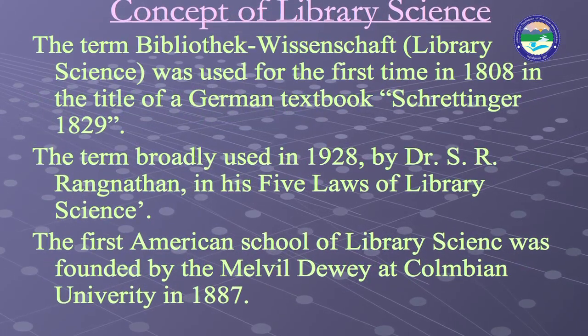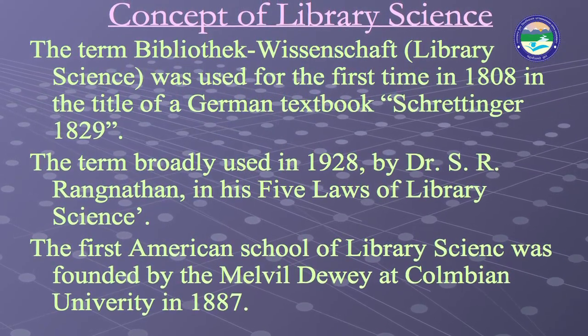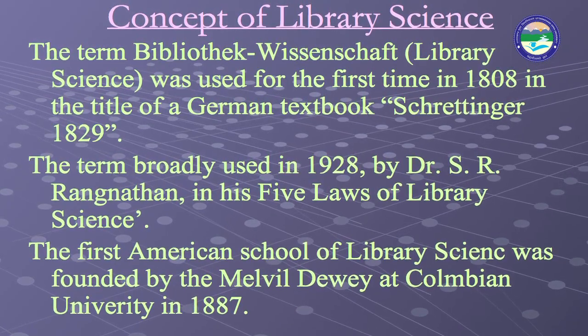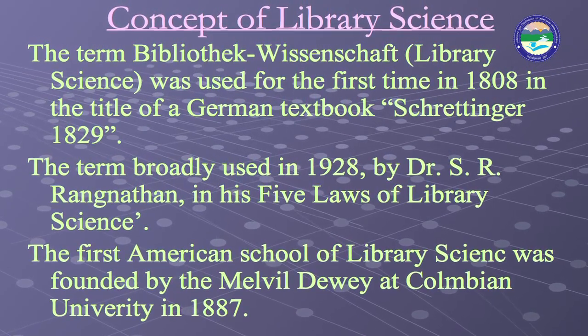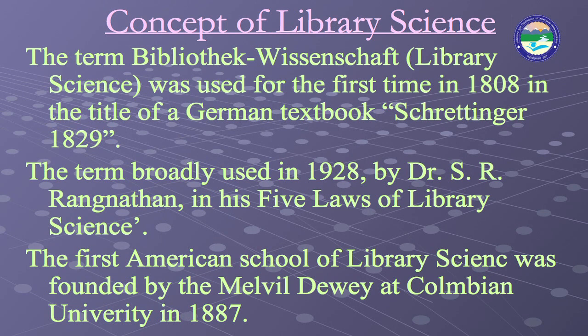The term 'Bibliothek Wissenschaft', which in English means library science, was used for the first time in 1808 in the title of a German textbook by Strithinger in 1829, and the term was broadly used in 1928 by the father of library and information science, Dr. S. R. Ranganathan, in his five laws of library science. The first American school of library science was founded by Melville Dewey at Columbia University in 1887.